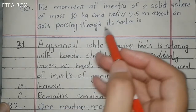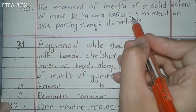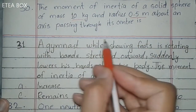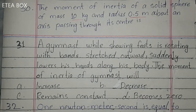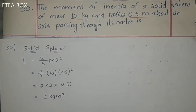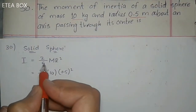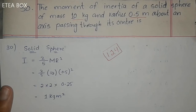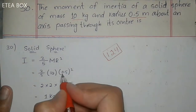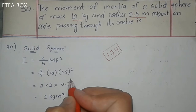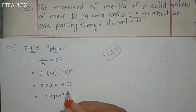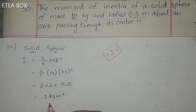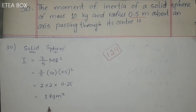MCQ 30: Moment of inertia of a solid sphere of mass 10 kg and radius 0.5 m about an axis through its center. The formula is I = (2/5)mr². So I = (2/5) × 10 × (0.5)² = (2/5) × 10 × 0.25 = 4 × 0.25 = 1 kg·m².